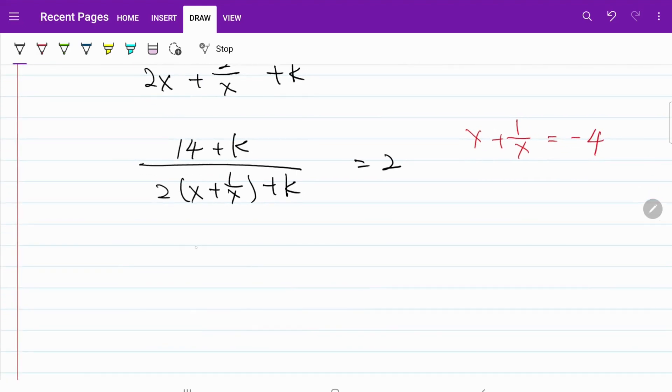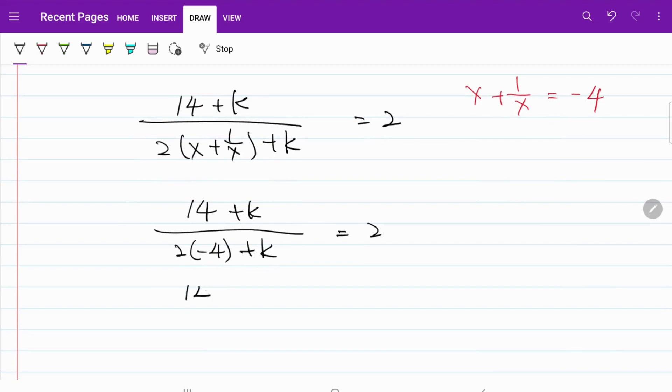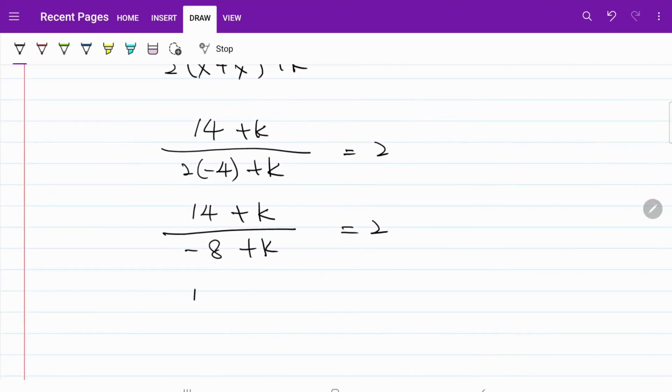In other words, the equation can now be expressed as 14 plus k divided by 2 times negative 4 plus k equals 2. So I have 14 plus k over negative 8 plus k equals 2, which gives us 14 plus k equals negative 16 plus 2k.